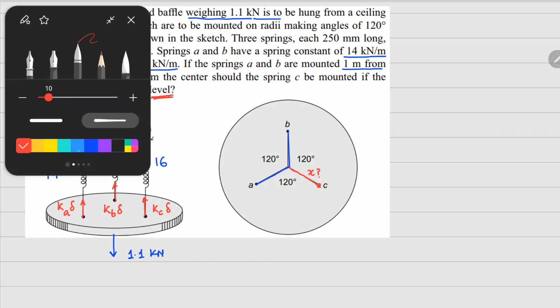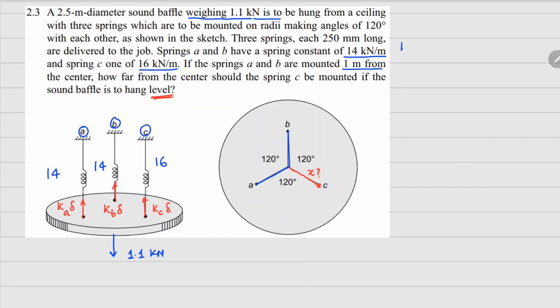From the force balance we can see that ka times delta plus kb times delta plus kc times delta need to satisfy 1.1 kilonewtons. If I substitute the value of ka, kb, kc here, it's going to become 44 kilonewtons per meter times delta.